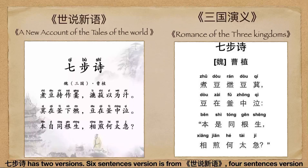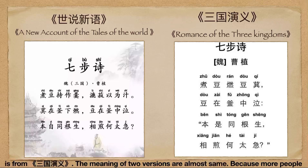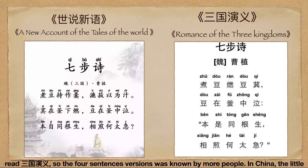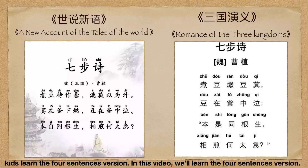Qi Bu Shi had two versions. The six-sentence version is from Shi Shu Xin Yu, and the four-sentence version is from San Guo Yan Yi. The meaning of the two versions are almost the same, but because more people read San Guo Yan Yi, the four-sentence version was known by more people. In China, little kids learn the four-sentence version.